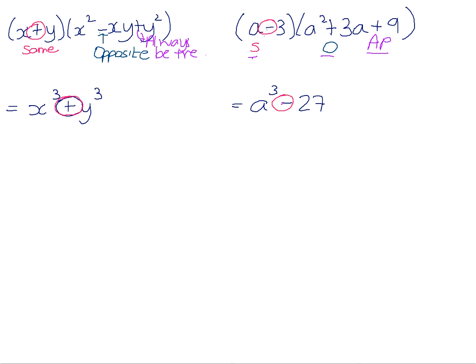The terms in the first bracket are the cube roots of the terms in the product. The cube root of x cubed is x, the cube root of y cubed is y, the cube root of a cubed is a, and the cube root of 27 is 3. In the trinomial, the first term is the first term of the binomial multiplied by itself; the middle term is the product of the two terms in the binomial; and the last term is the last term of the binomial squared. For example, a squared is a times a, 3a is 3 times a, and 9 is 3 times 3.